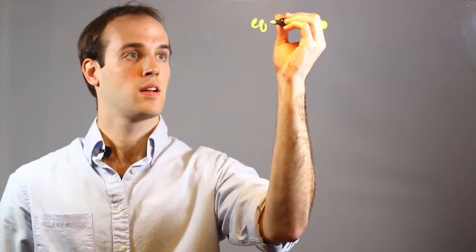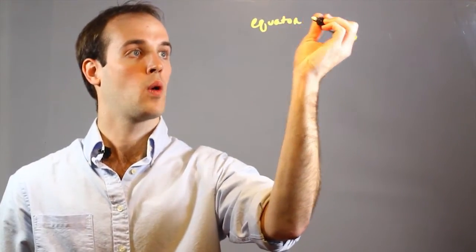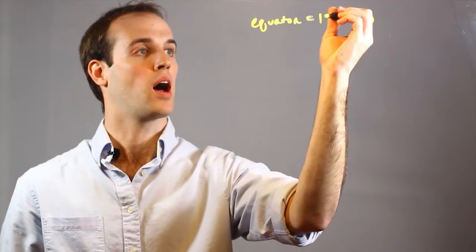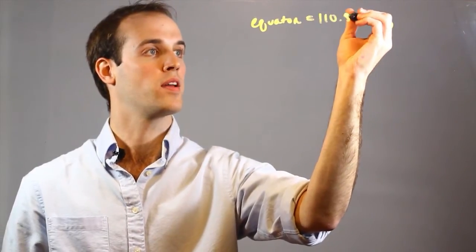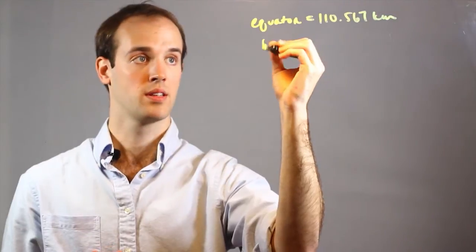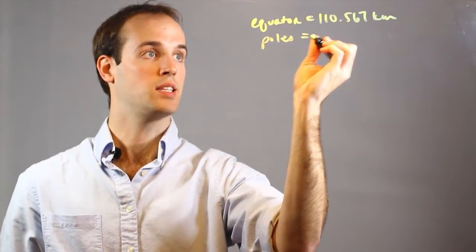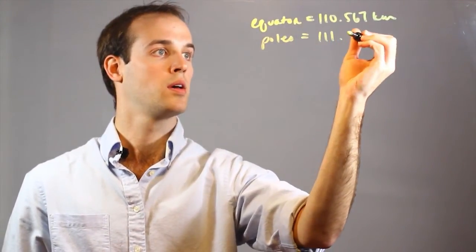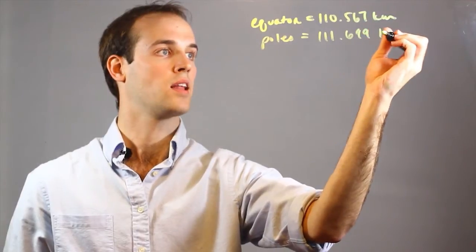At the equator, 1 degree latitude is equal to 110.567 kilometers. And at the poles, it's equal to 111.699 kilometers.